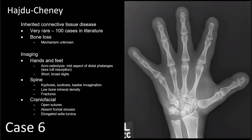Hajdu-Cheney is an inherited connective tissue disease with only about 100 cases reported in the literature, characterized by bone loss of unknown mechanism. On imaging of the hands and feet, you can have acro-osteolysis usually starting at the mid-aspect of the distal phalanges, which helps differentiate Hajdu-Cheney from other causes that typically start at the distal tufts. These patients can have short, broad digits. They also have spinal manifestations including kyphosis, scoliosis, basilar invagination, low bone mineral density, and multiple fractures, as well as craniofacial findings of open sutures, absent frontal sinuses, and elongated sella turcica.